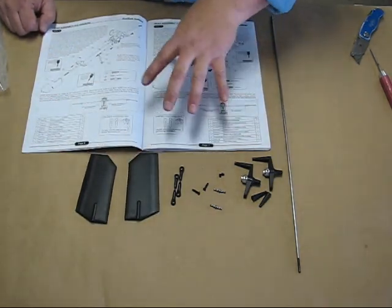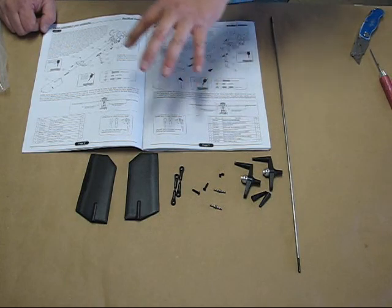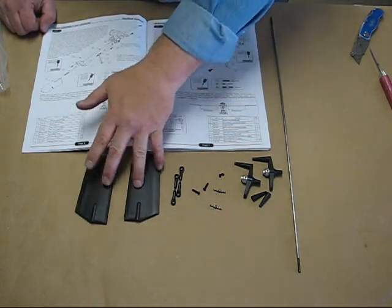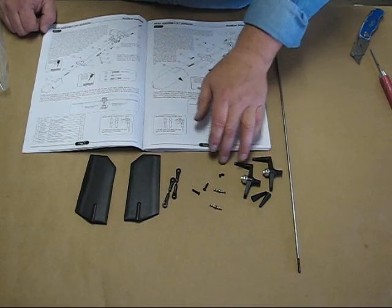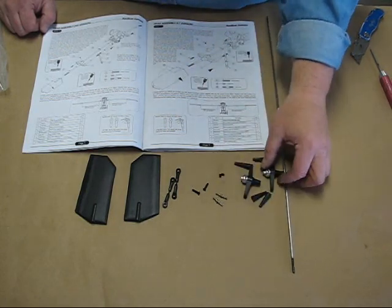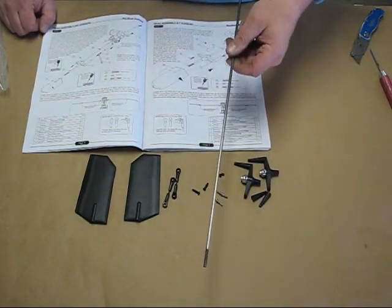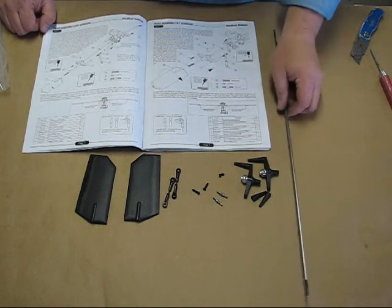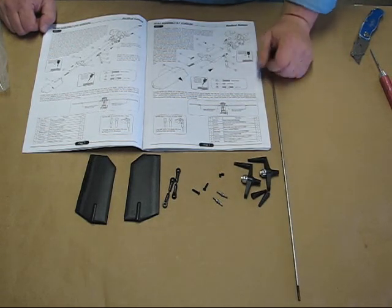We've got the flybar paddles from the next compartment in bag one. There are the paddles, links, screws, set screws, ball links, and the flybar cage itself. You'll have to get the flybar out of the bag with the tail boom.